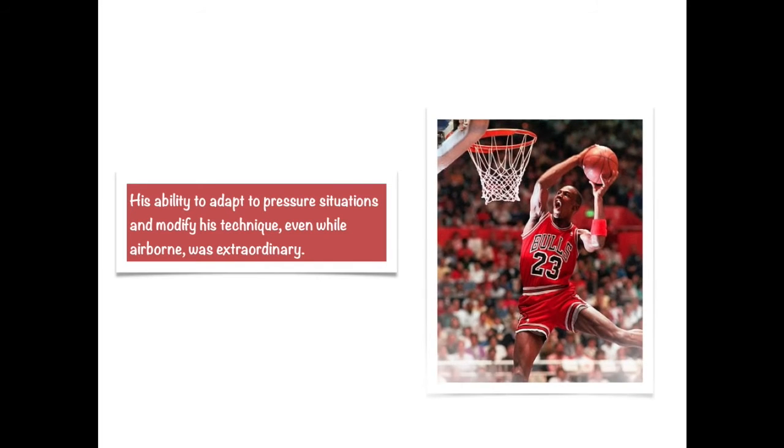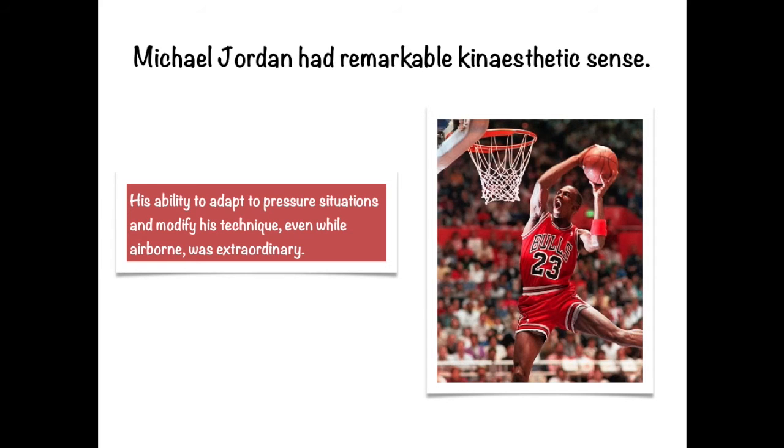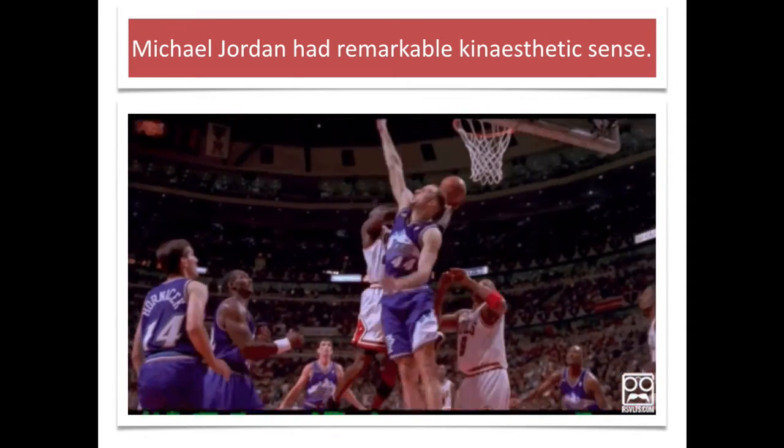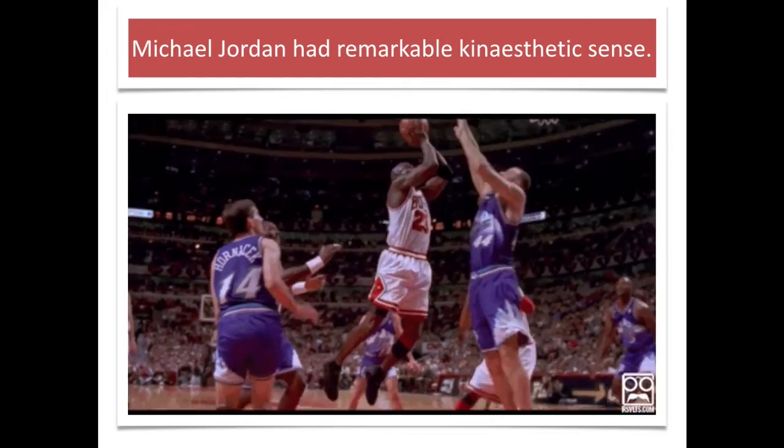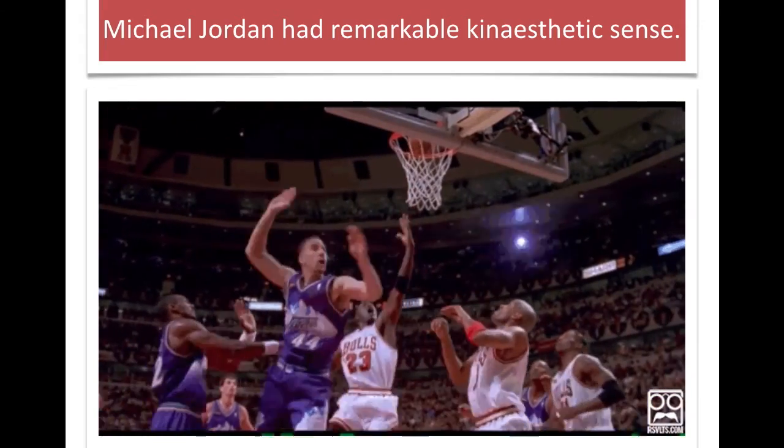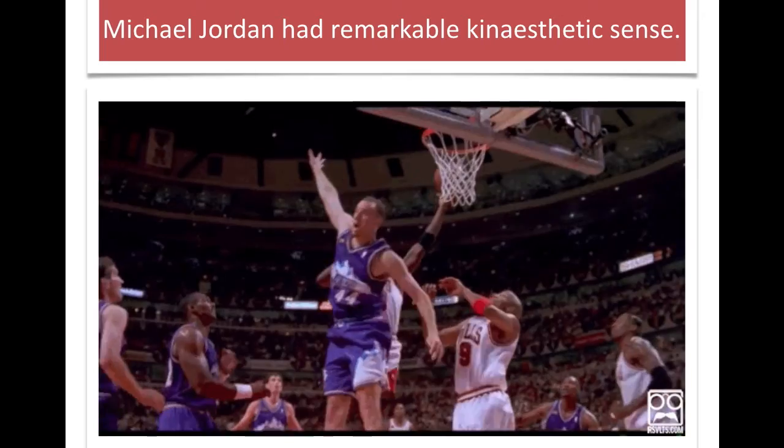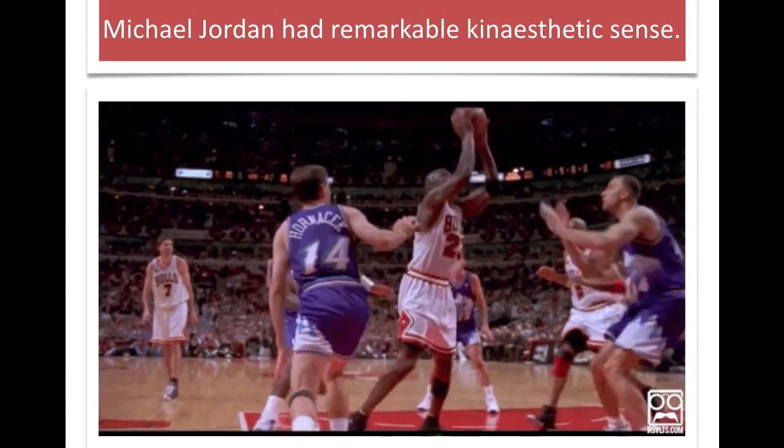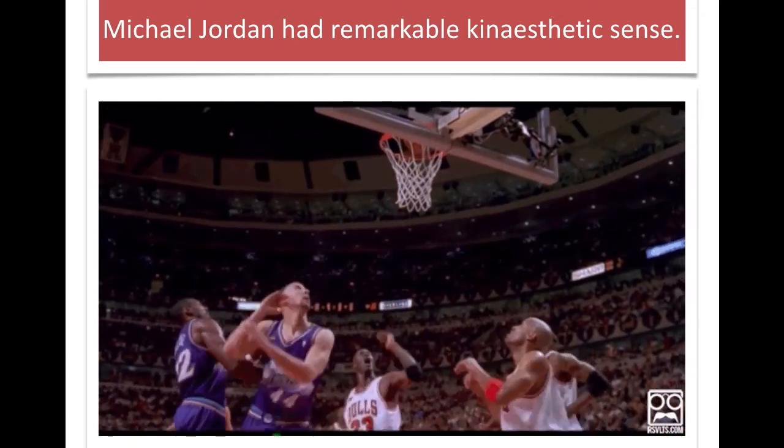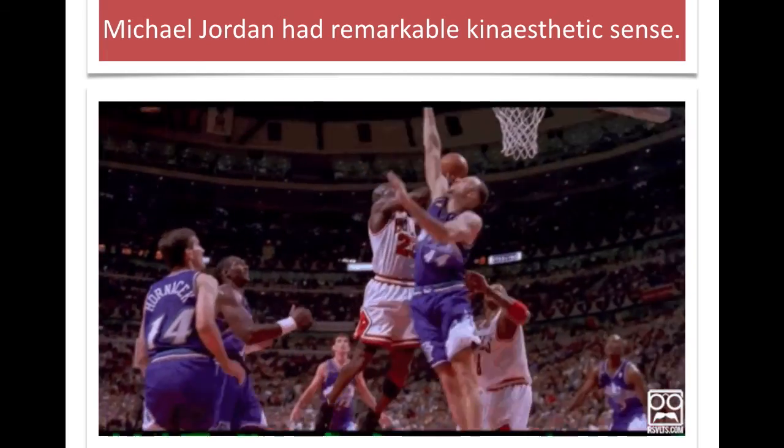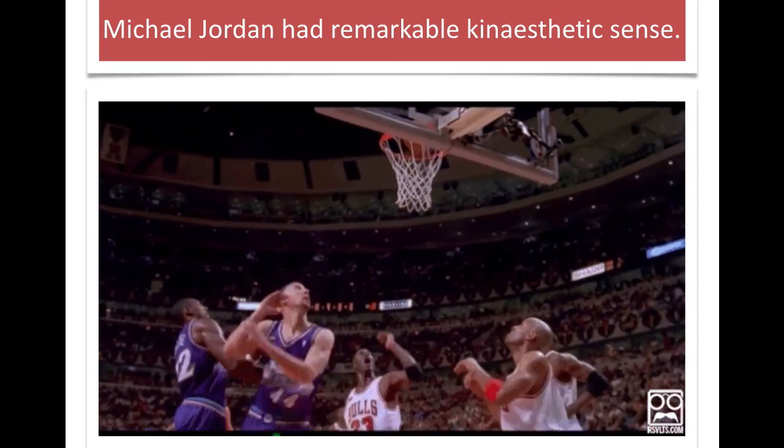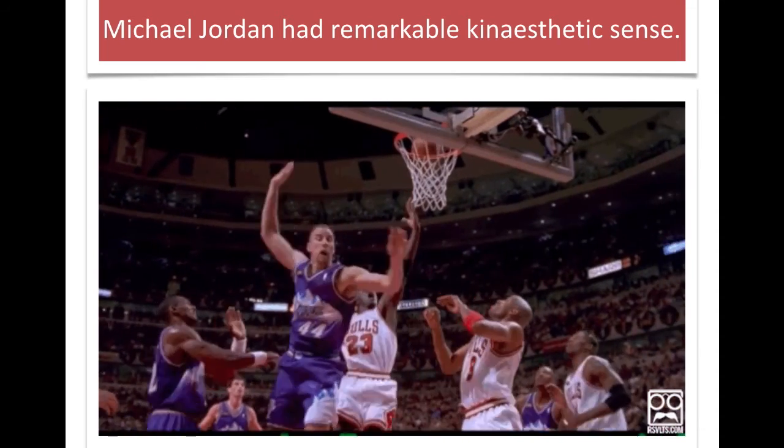Michael Jordan was a fantastic basketball player, and he had a remarkable kinesthetic sense. His kinesthetic sense is really exemplified in this little clip. You can see that as he takes off from the ground and puts the ball into the basket, he modifies his movement while he's in mid-air. He's able to sense where the opponent is and what he should be doing to get the ball around the player and put it in the basket. His capacity to sense what's going on there and make changes to his technique is another great example of kinesthetic sense.